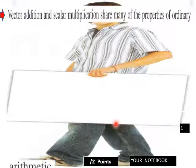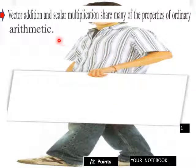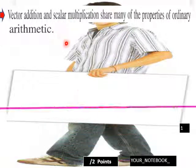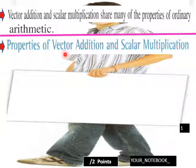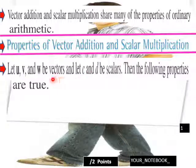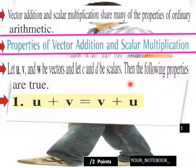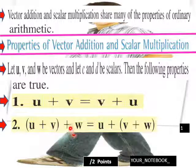Moving on now into our first slide of today's lesson. Vector addition and scalar multiplication share many of the properties of ordinary arithmetic. Let u, v, and w be vectors, and let c and d be scalars. Then the following properties are true.